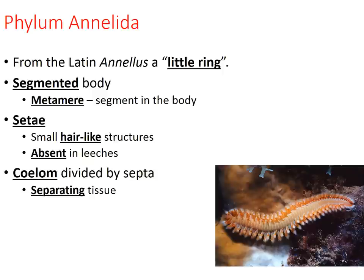A few characteristics about the annelids. Their name comes from the Latin term 'annelis,' which means 'little ring.' If you look at them, their bodies are segmented — they look like they have rings around them. These different segments on their body are called metameres.